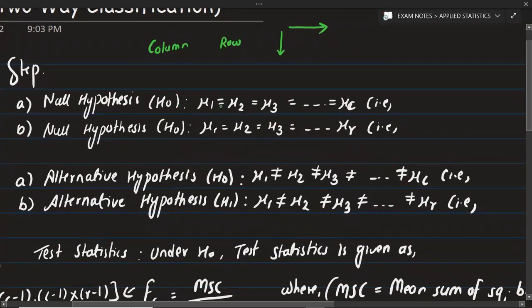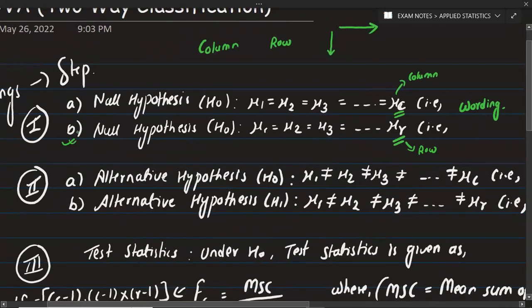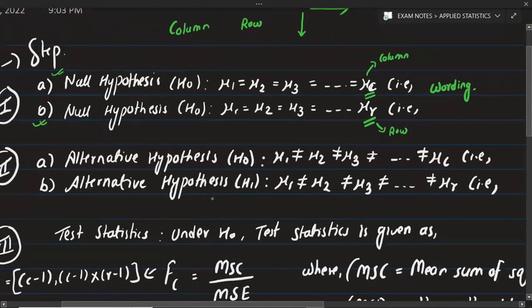The null hypothesis is that Mu1 is equal to Mu2, is equal to Mu3, and so on — meaning all group means are equal. The alternative hypothesis is that at least one is not equal: Mu1 is not equal to Mu2, is not equal to Mu3.